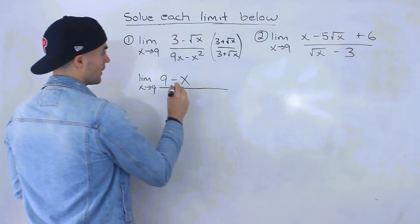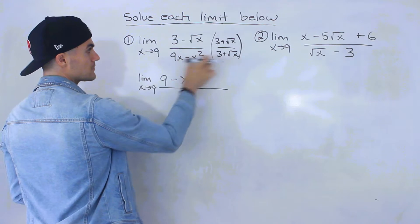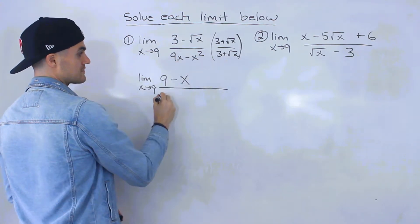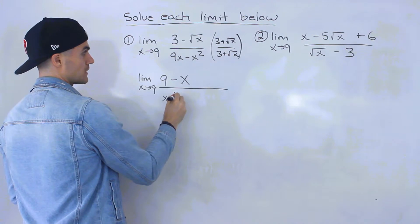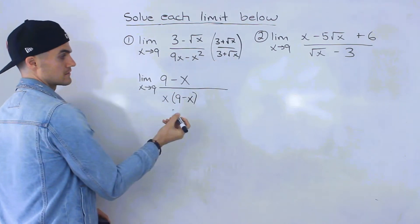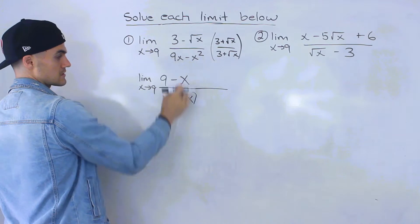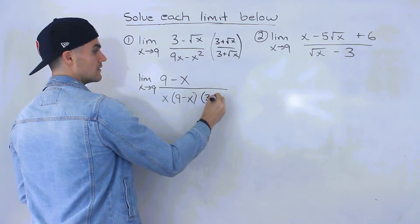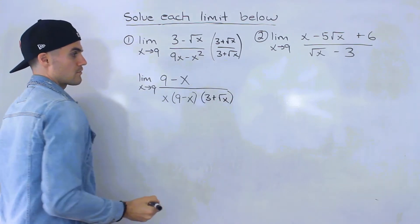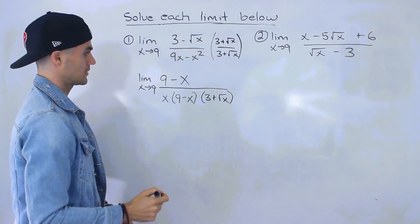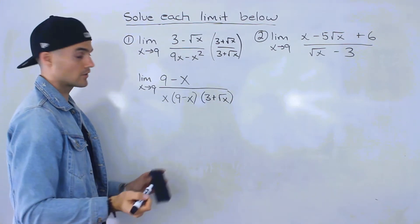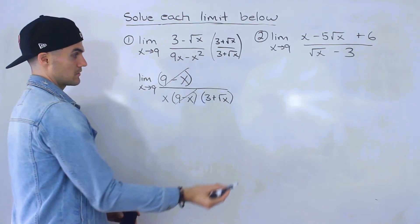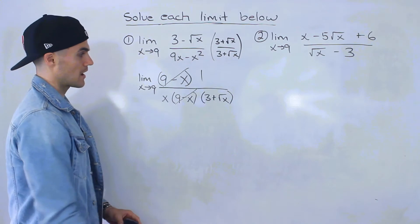At the bottom, I'll factor out an x. We'd end up with 9 minus x. Then we have 3 plus root x separately. The reason I factored out that x is so the 9 minus x terms cancel out. I'm just left with a 1 up top.